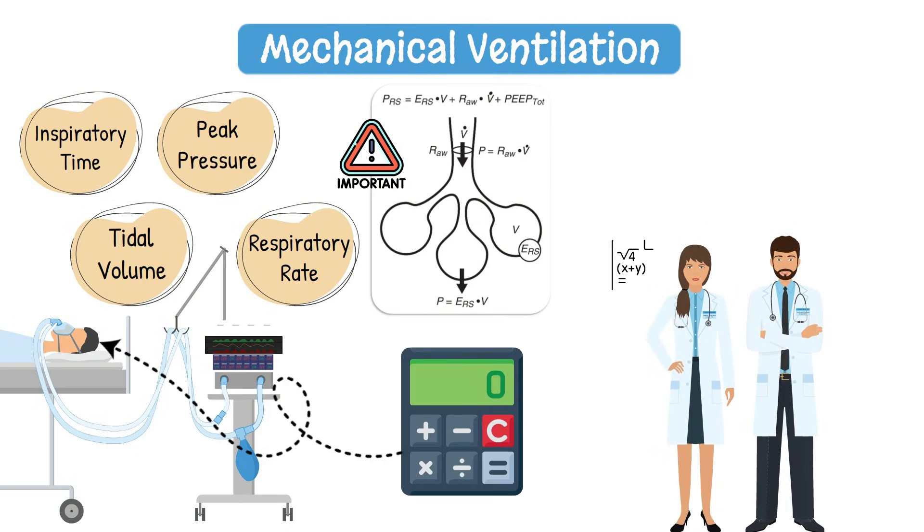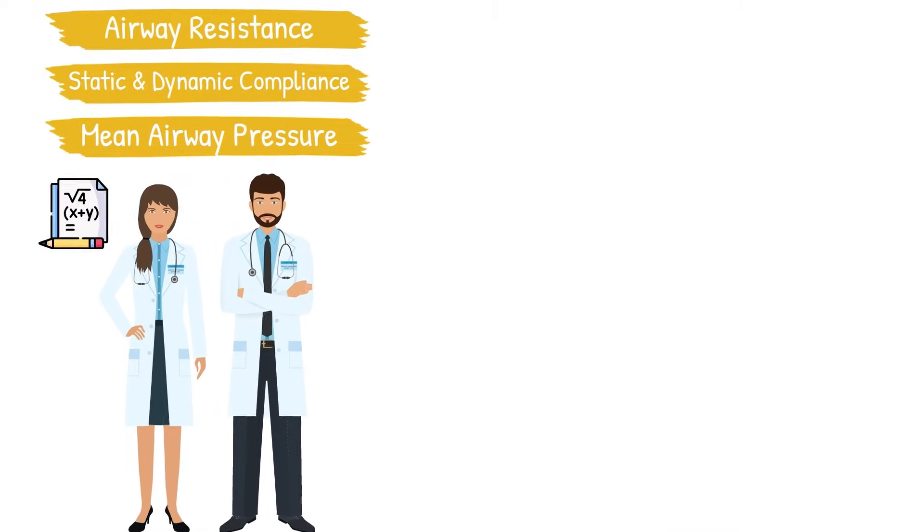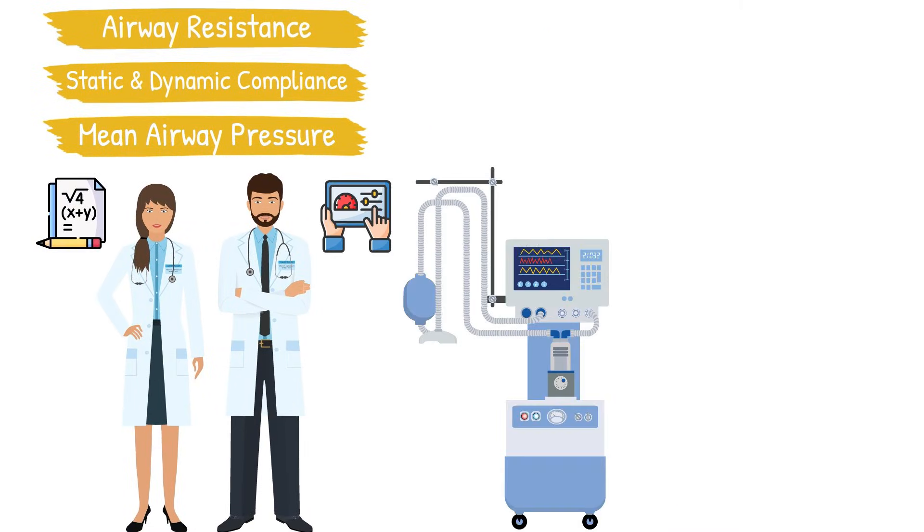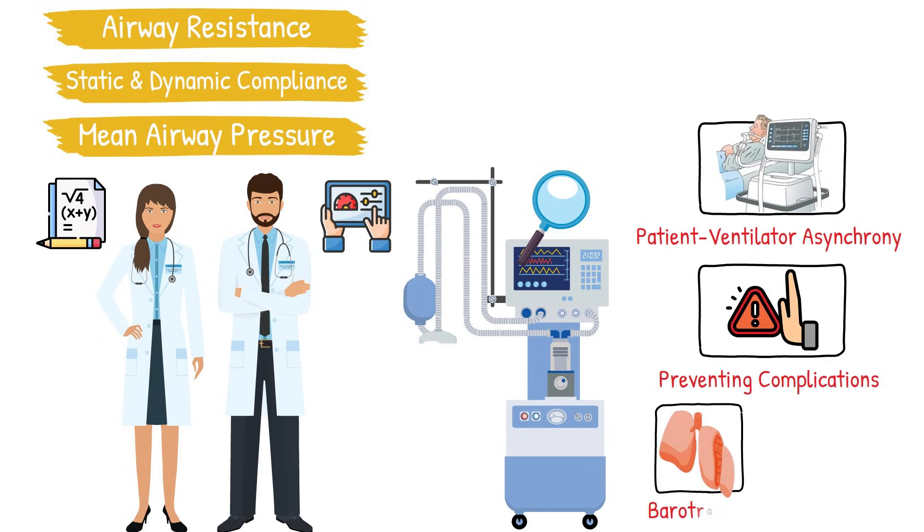Respiratory therapists use formulas to determine mean airway pressure, static and dynamic compliance, airway resistance, and more. These numbers guide you in adjusting the ventilator, identifying patient ventilator asynchrony, and preventing complications like barotrauma or volutrauma.